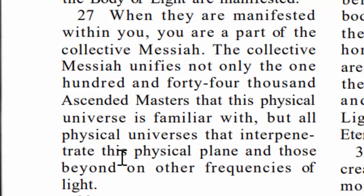Verse 27 says when they are manifested within you, you are a part of the collective Messiah. So you have these entities that are working with us, but you also have people that are trying to block them out. One of the most effective ways to block our access to these higher intelligences is for us to forsake the law. When we start to abandon the law and get away from the Torah, that actually puts us in an unclean state where we have no access to these Brothers of Light. The Illuminati's plan is to keep us away from these Brothers of Light so these entities of dark can have their way with us.